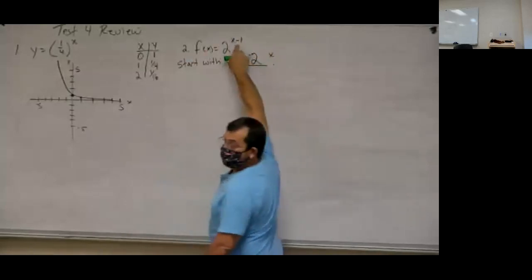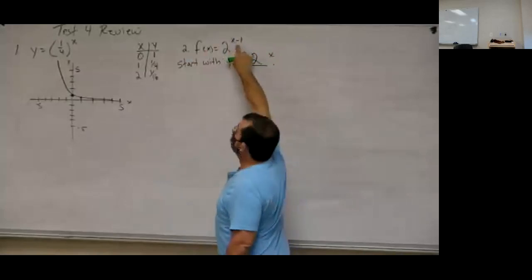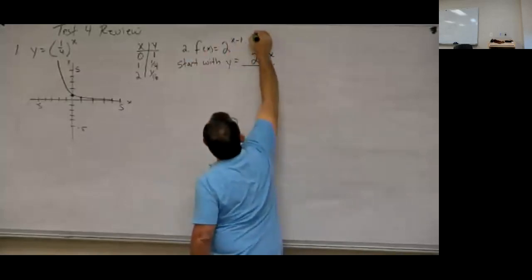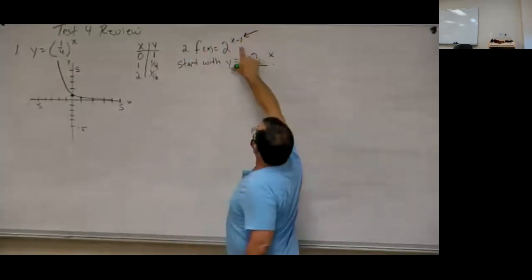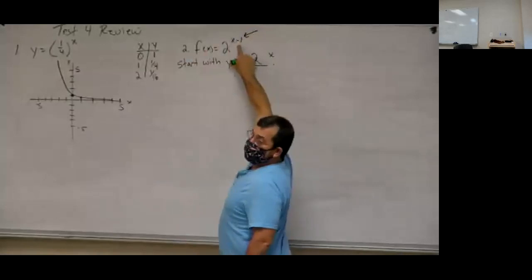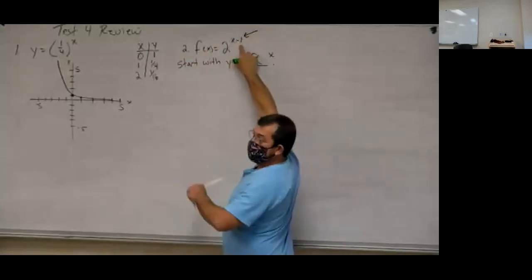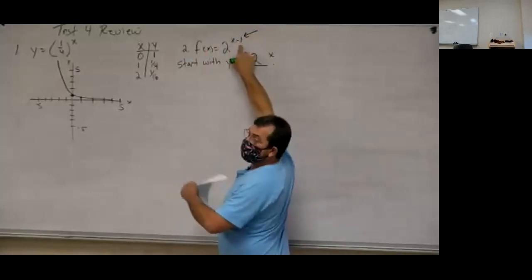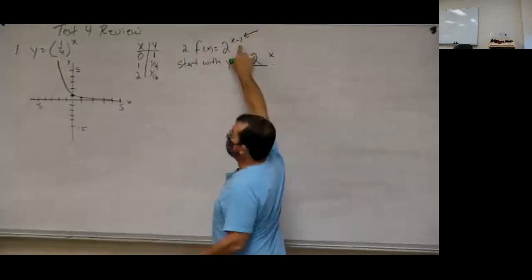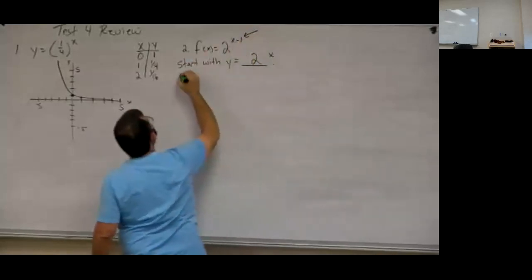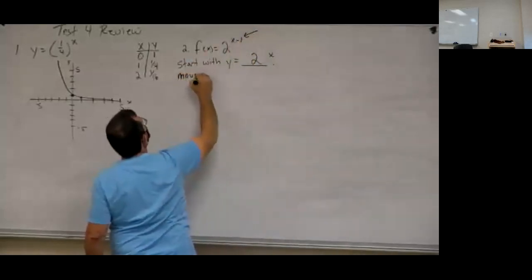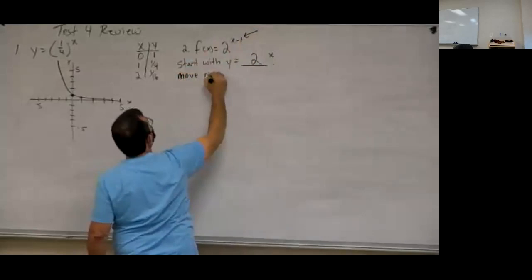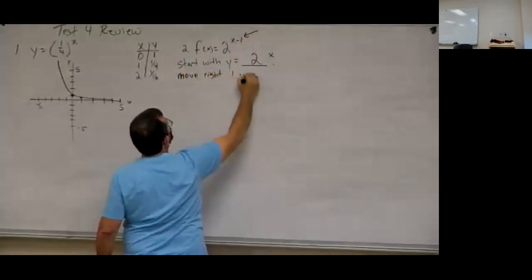We've got to figure out what that negative 1 is doing to the graph. Any time you affect the exponent, you're going to go left or right. If it's negative, the graph moves right. If it's positive, it goes left. So since it's negative, this graph will move right one unit.